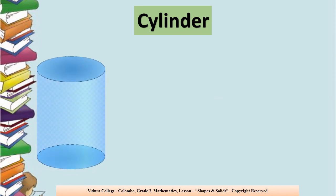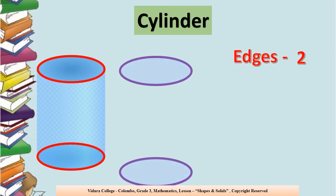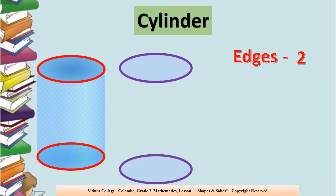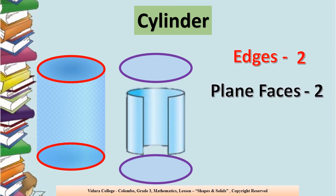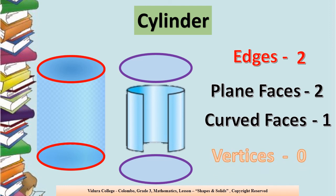Cylinder. In the cylinder, how many edges are there? There are 2 edges: 1, 2 — the top and the bottom. And how many plane faces are there? There are 2 plane faces. And how many curved faces are there? There is only 1 curved face. Can you see any vertices? No — there are no vertices in the cylinder.